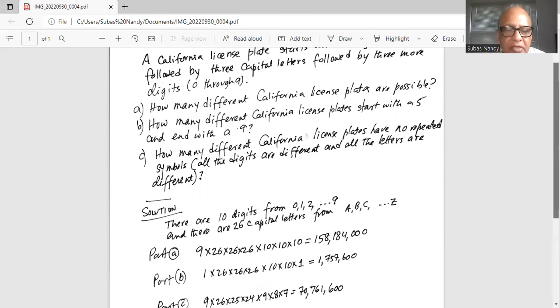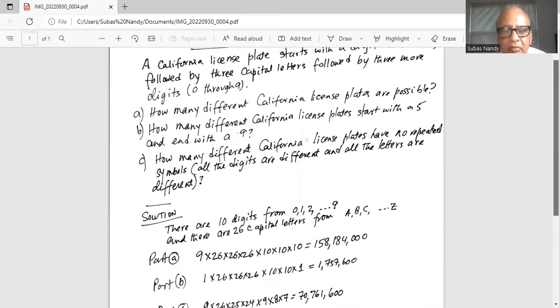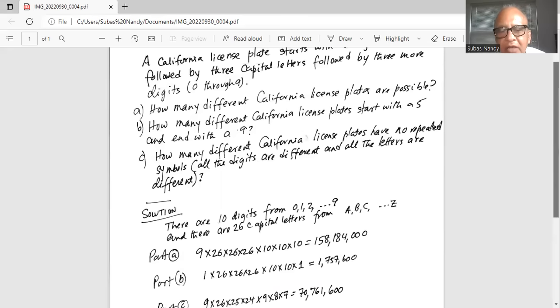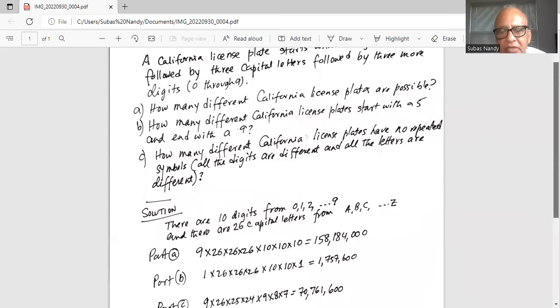So the next is an alphabet capital alphabet so there are 26 possibilities of that then again 26 possibilities of the second letter and 26 possibility for the third letter and then we have three more digits zero through nine. Remember there are 10 digits zero through nine. So the next three digits possibilities are 10 times 10 times 10.